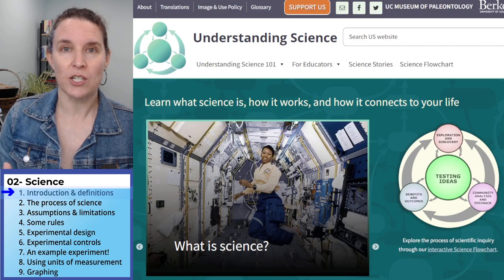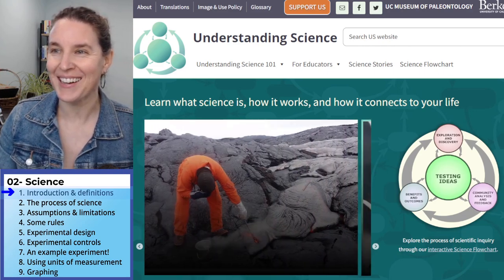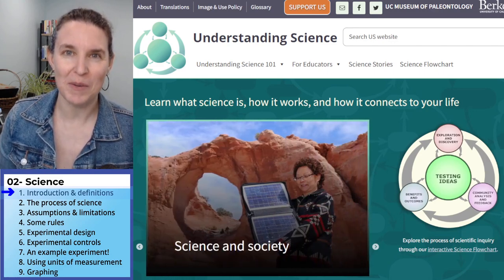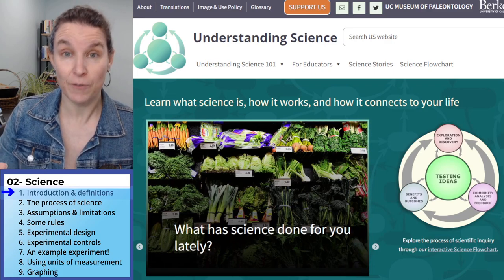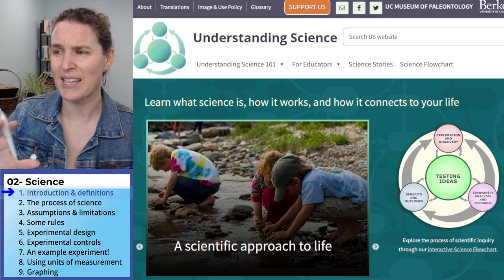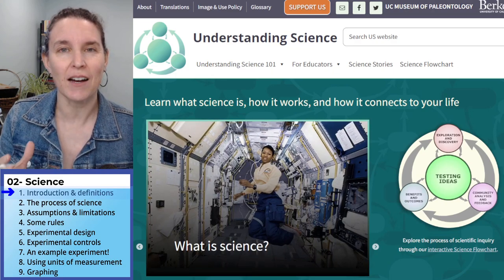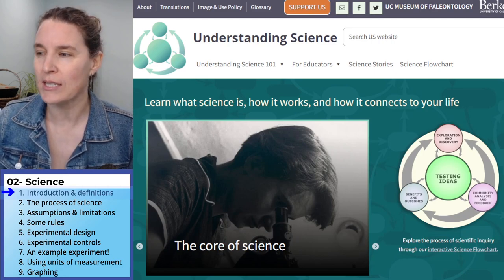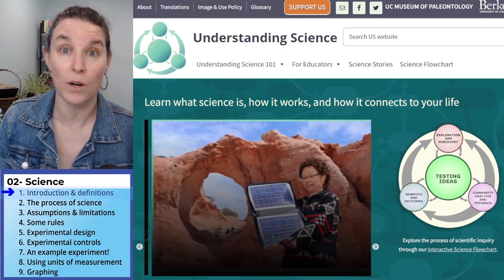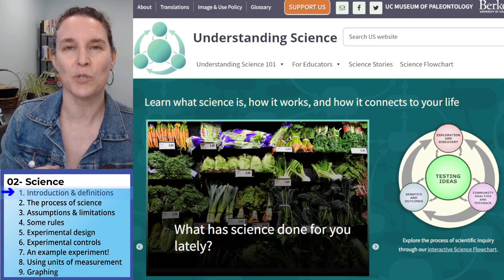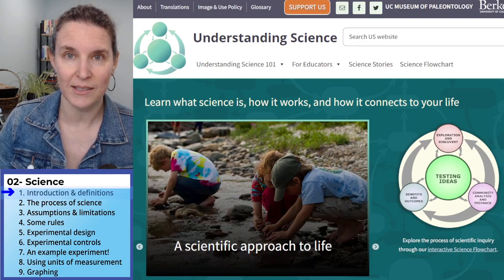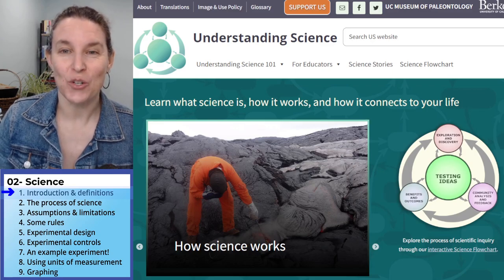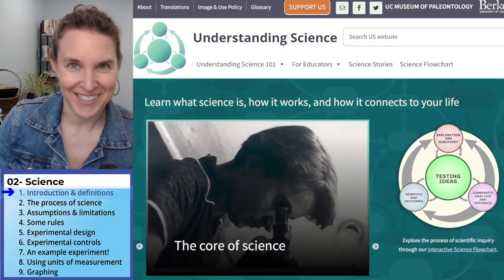We're going to start out with some definitions. You'll notice that I have a website up right now, and this website is one of my primary go-tos when I am looking for information about science. This site is phenomenal. It addresses the process of science. It has incredible resources, great diversity of different kinds of scientists, different kinds of science that's being done, and my most favorite part is this little visual here that we're going to spend some time looking at, but it does a really awesome job of talking through how the process of science is rarely linear, and it's often sort of creative and exciting, which depending on your exposure to science, that may not be your experience with the process of science.